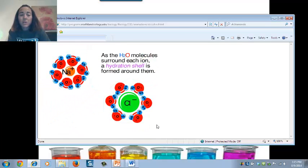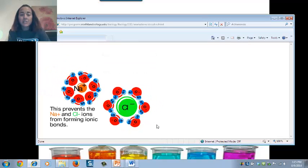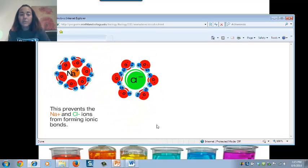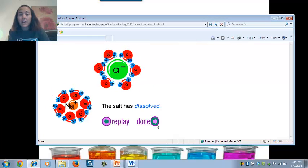As the water molecules are dissolving those ions, they create little shells around them that prevents the sodium and the chloride ions from getting back together. That's what dissolving is.